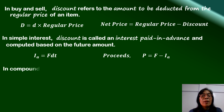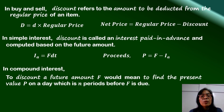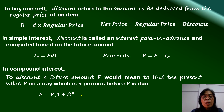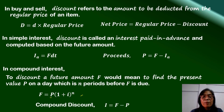In compound interest, to discount a future amount or the future value of money means to find the present value on a day which is n periods before F is due. We have already derived this formula for the future value of money: F is equal to K times 1 plus i raised to n. We will use the same formula to solve for the present value. The compound discount is computed as the future amount less the present value of the money.